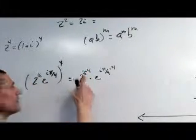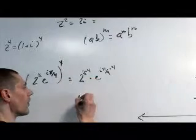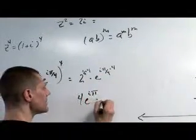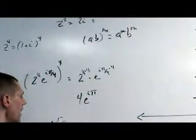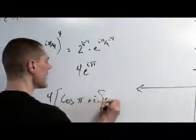2 to the 1 half, this is going to be 2 to the 1 half times 4, is 2 to the 2, this is 4. Times e to the i pi. This is, I guess I'll go down here so I have room. This is going to be 4 times cosine pi plus i sine pi.